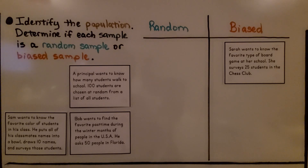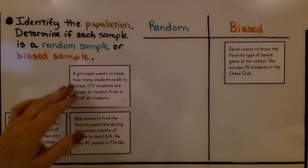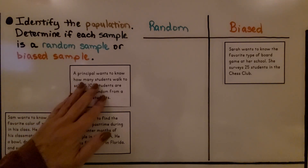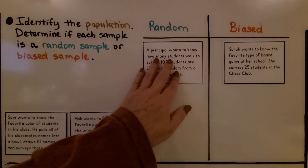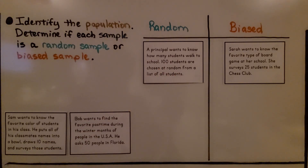The next example says: a principal wants to know how many students walk to school. 100 students are chosen at random from a list of all students. Here's a clue — they were chosen at random. This would be a random sample of the population because he's picking 100 random students from a list.